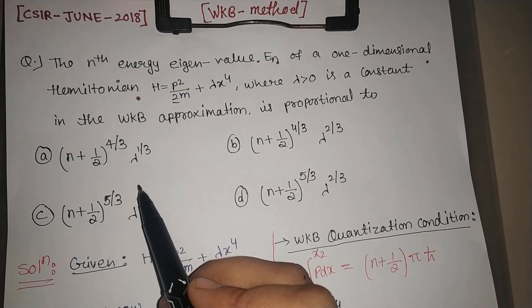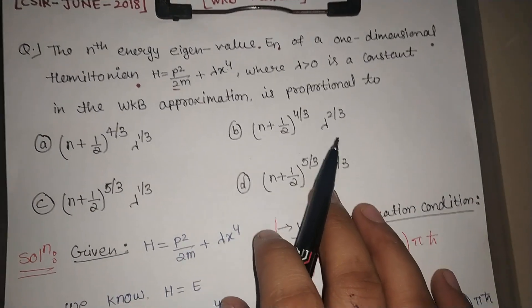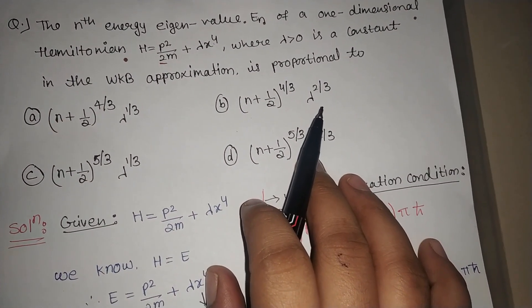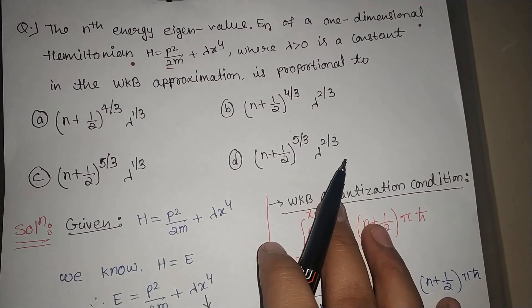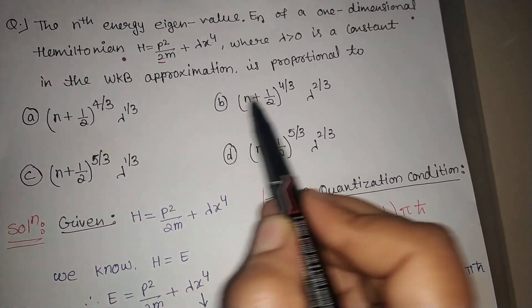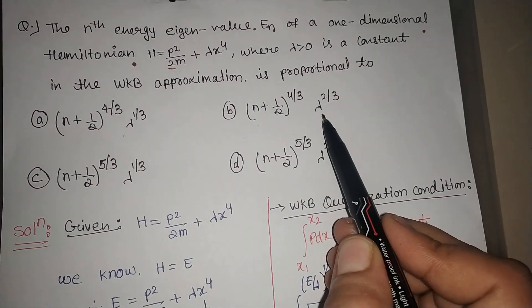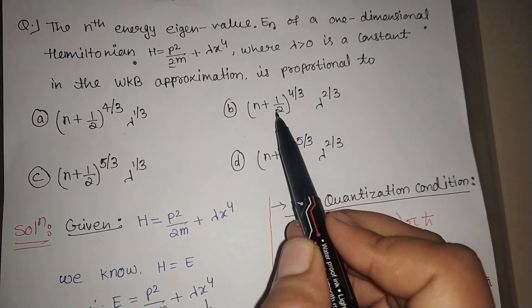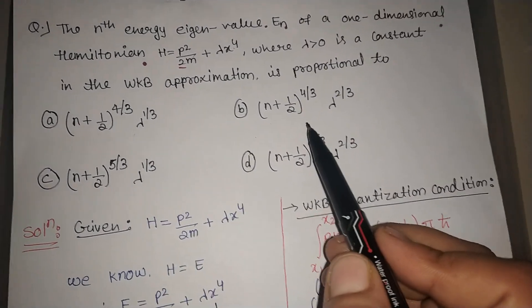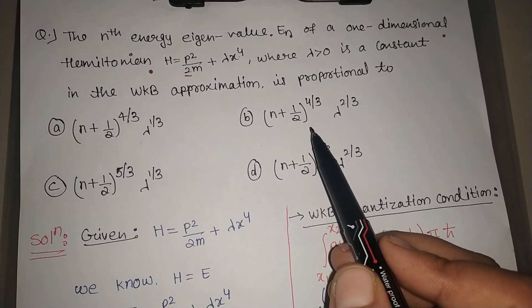In this question, if we use the trick method it will not be valid here, because as you can see, in two of the options the power of n is the same but λ is different. You can find out the λ dependence, but what about the n power? Because of this similarity you cannot use the trick method here — we have to use the traditional method.